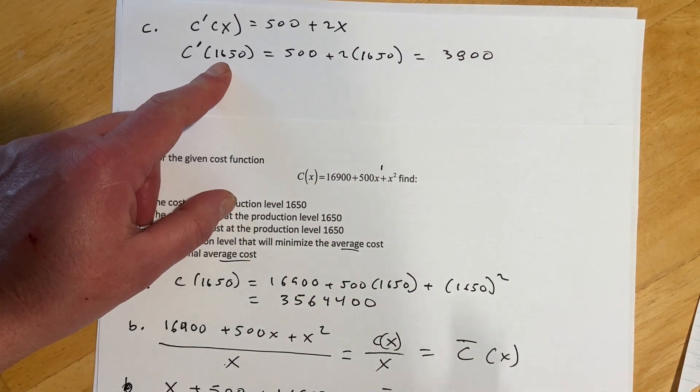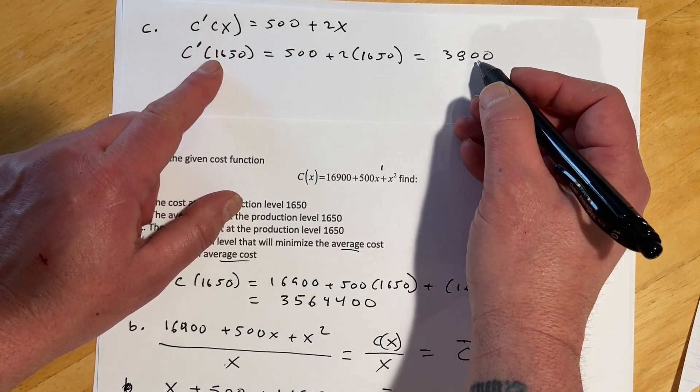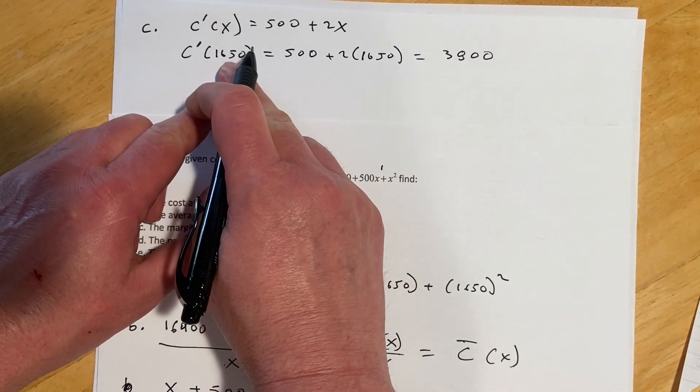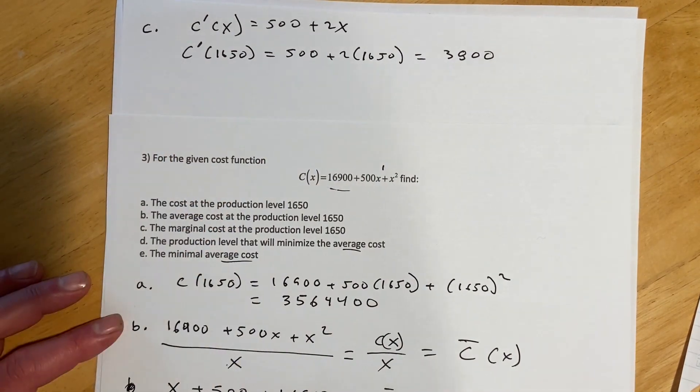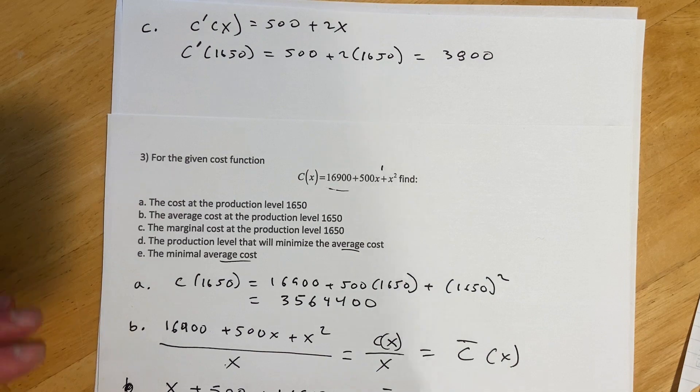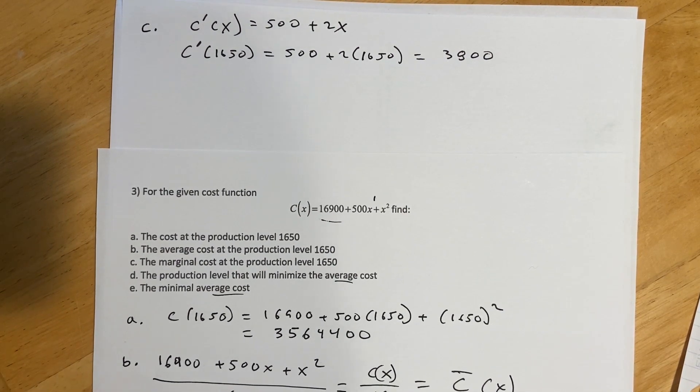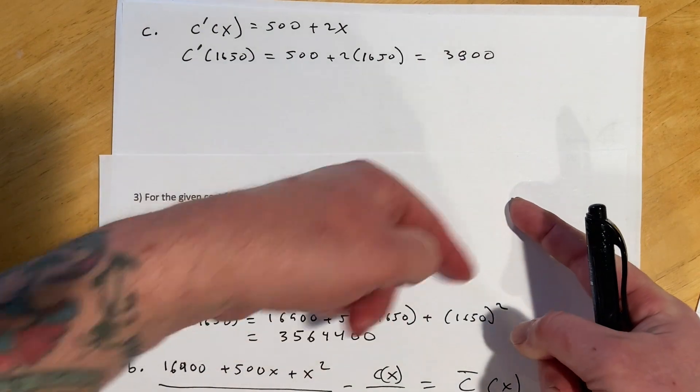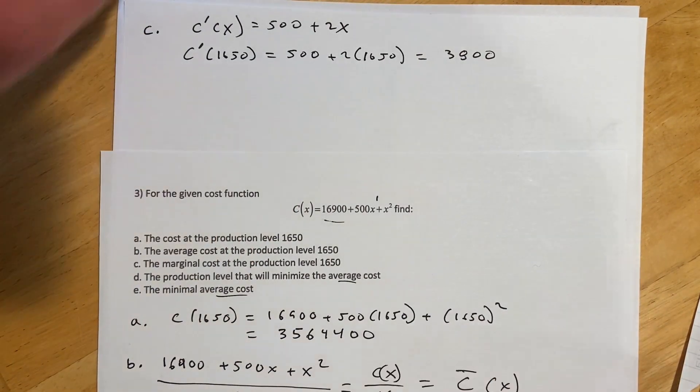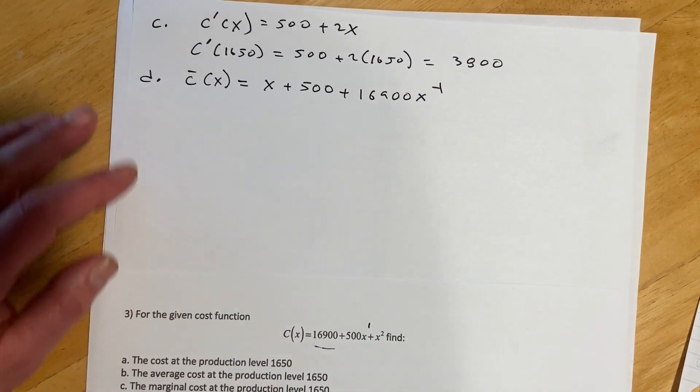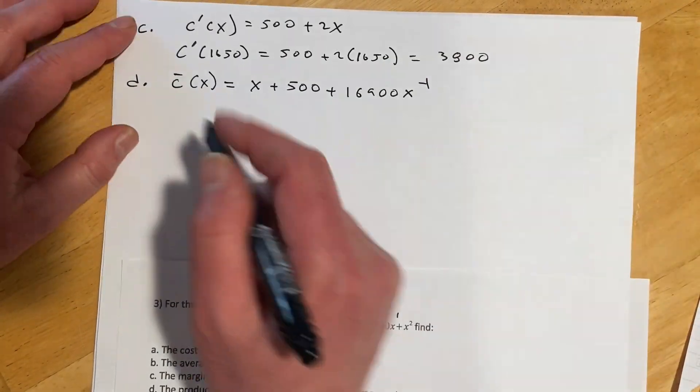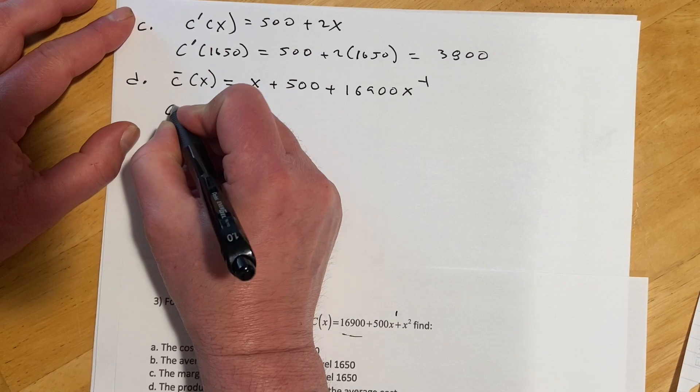And so, and then again, this is the cost to produce, this is the approximate cost to produce the $1,651 item. If you want the exact one, you would do $1,651, that cost minus this cost. But the marginals give you an approximation of that. For D, we're looking for the production level that will minimize the average cost. So what that means is I need to, if I'm trying to minimize the average cost, that means I'm looking for where it would be like the low part of that, a min. So I need to take my average cost function, which I will write down for my last page. So there's my average cost function. And so to find the production level that will minimize this, I need to take the derivative and then find that min.